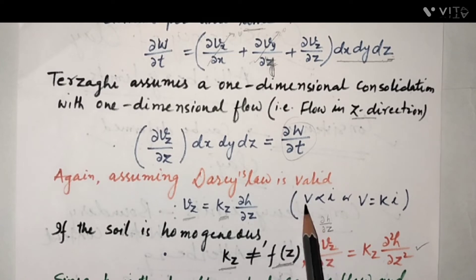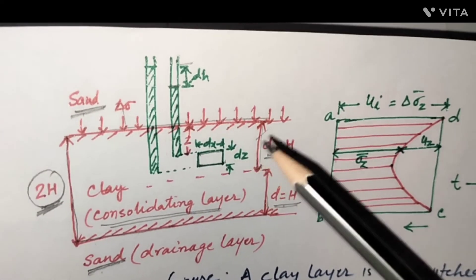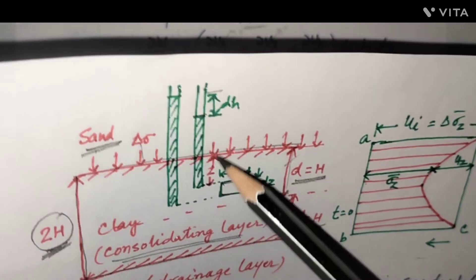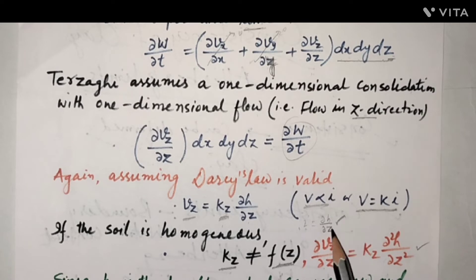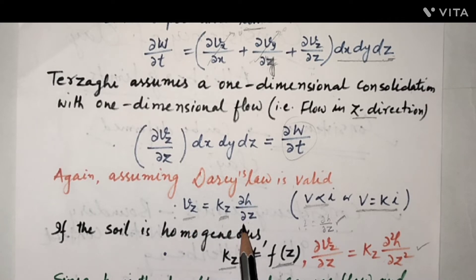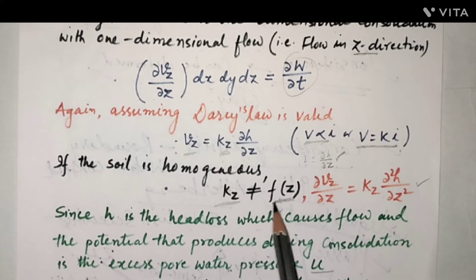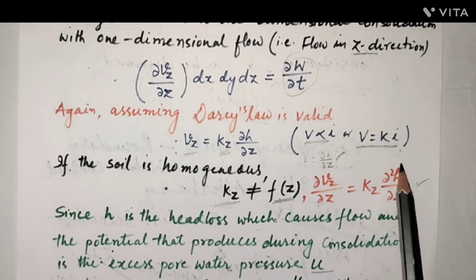Assuming Darcy's law is valid — V = ki — the hydraulic gradient i = ΔH/Δz. From the piezometer, the head difference is ΔH and the depth is z, so i = ΔH/∂z. Therefore Vz = kz · ∂H/∂z. If the soil is homogeneous, permeability kz is not a function of z, so this equation becomes: ∂Vz/∂z = kz · ∂²H/∂z².